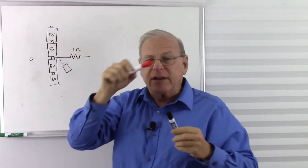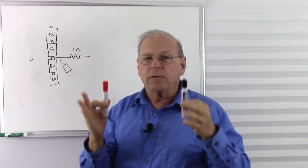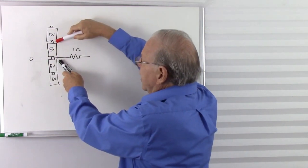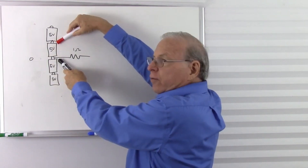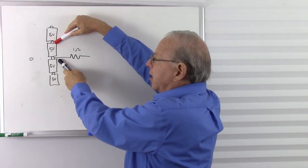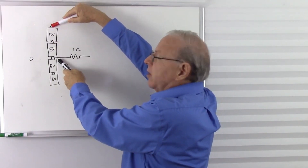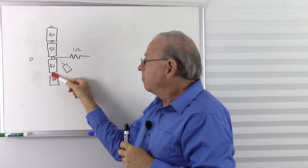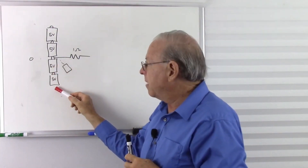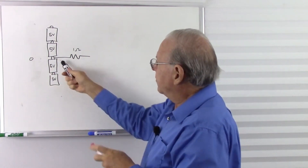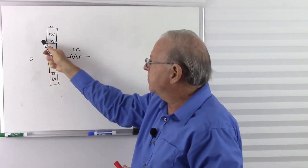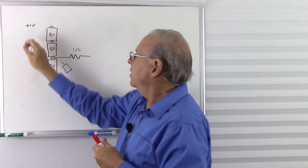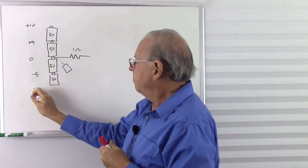If I put the red lead there, red lead is at the same voltage as the black lead, voltmeter tells me the difference - there is no difference, I get 0 volts. Now there's a 5-volt difference - this voltage is 5 volts higher, so I read plus 5. Five volts even higher, I read plus 10. Now I go down here, I'm 5 volts lower, so that's minus 5. Even 5 volts lower down here, it's minus 10 volts. So if I put my voltmeter here, instead of having 0, 5, 10, 15, and 20, I have 0, plus 5, plus 10, minus 5, minus 10.